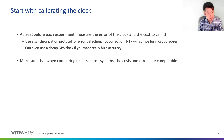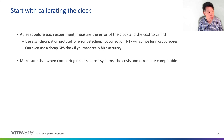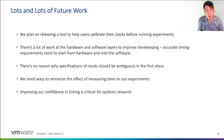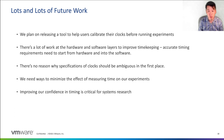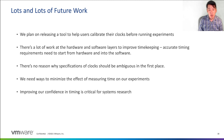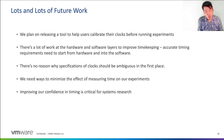When we compare results across systems, we need to compare these calibrations and make sure that we can compare results. This is going to be critical as we start getting more and more architectures. There's lots of future work: we plan on releasing a tool soon to help users calibrate their clocks before running experiments. There's a lot of work in both the hardware and software layers to improve timekeeping, and we think that accurate timing requirements need to move from the hardware into the software. There's no reason why the specifications of clocks should be so ambiguous in the first place. We need ways to minimize the effect of measuring time on our experiments.